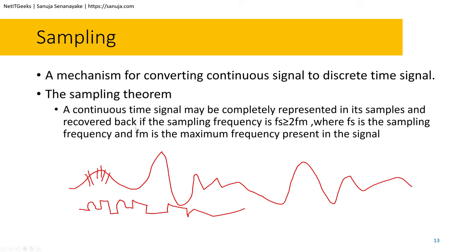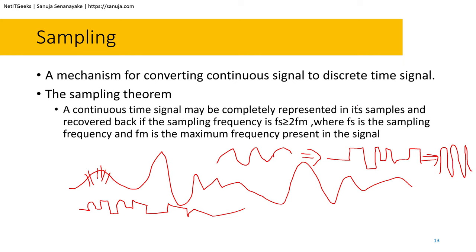The sampling theorem states that a continuous-time signal may be completely represented in its samples and recovered back if the sampling frequency FS is greater than or equal to two times FM, the maximum frequency of the represented signal. You don't need to know the mathematical formula, but what you need to understand is that when you have a VoIP phone on your network, the signal is sampled, communicated through your fiber optic system, and then converted back into the sinusoidal curve heard by the other party.